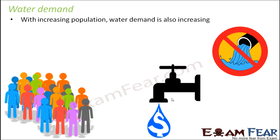One simple thing we can do is stop wasting water. We already have less water, which is unable to fulfill the demand of the increasing population. On top of that, if we waste water, the shortage becomes even worse. So we should stop unnecessary wastage of water so that we can at least meet the basic needs of the growing population.